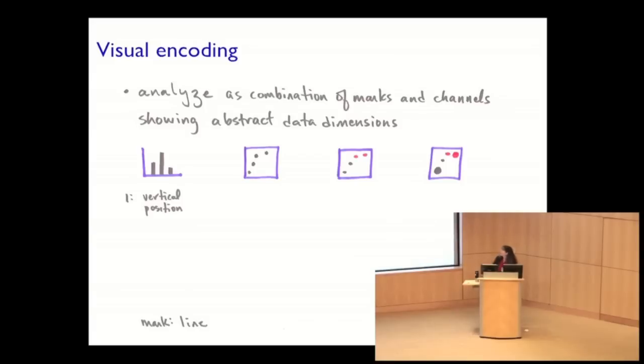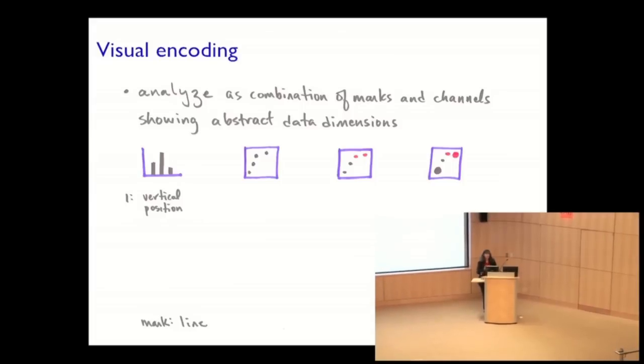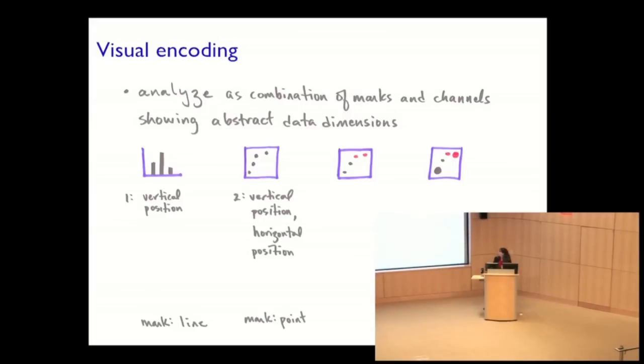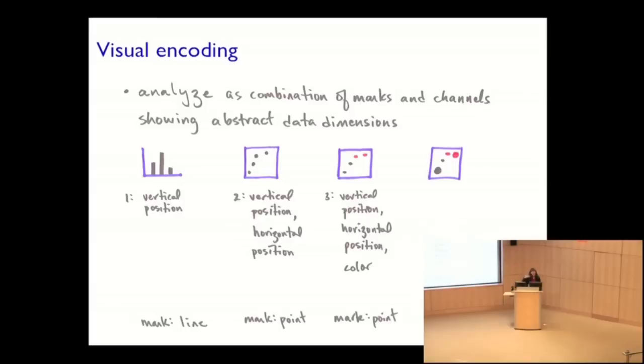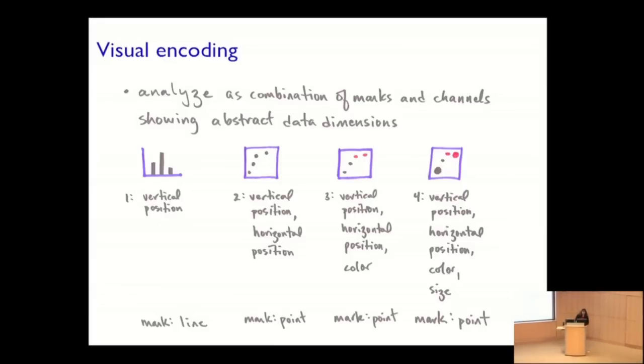So of course what we've got on the left is a bar graph. Breaking that down, we're using the mark type of a line and we're encoding one abstract data dimension using the visual channel of vertical position. Once we move to a scatter plot, we've switched to a point mark and now we're using both vertical and horizontal spatial position to encode two abstract data dimensions. We can add color to that so that's using a third abstract dimension and adding the visual channel of color. And then here we've added one more visual channel of size and now we're encoding four abstract dimensions.